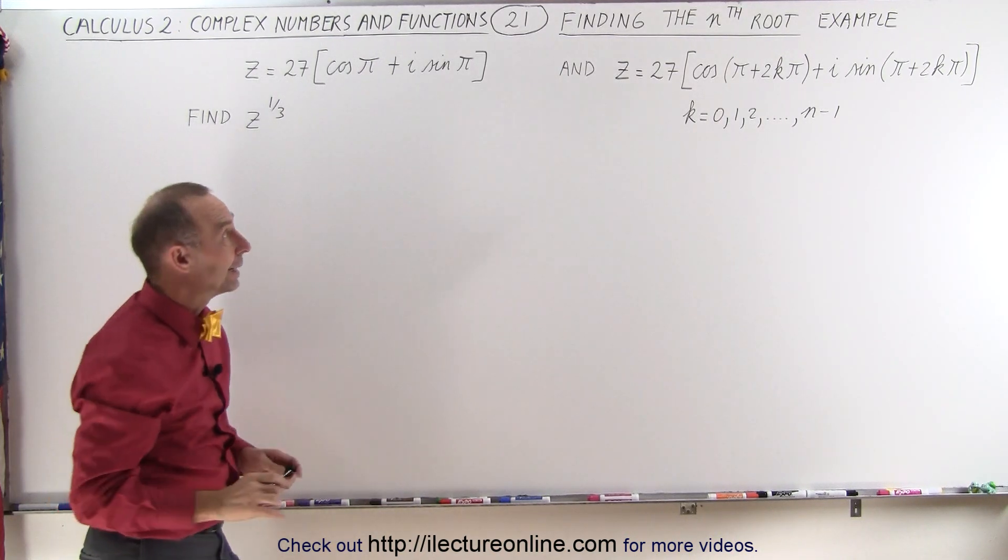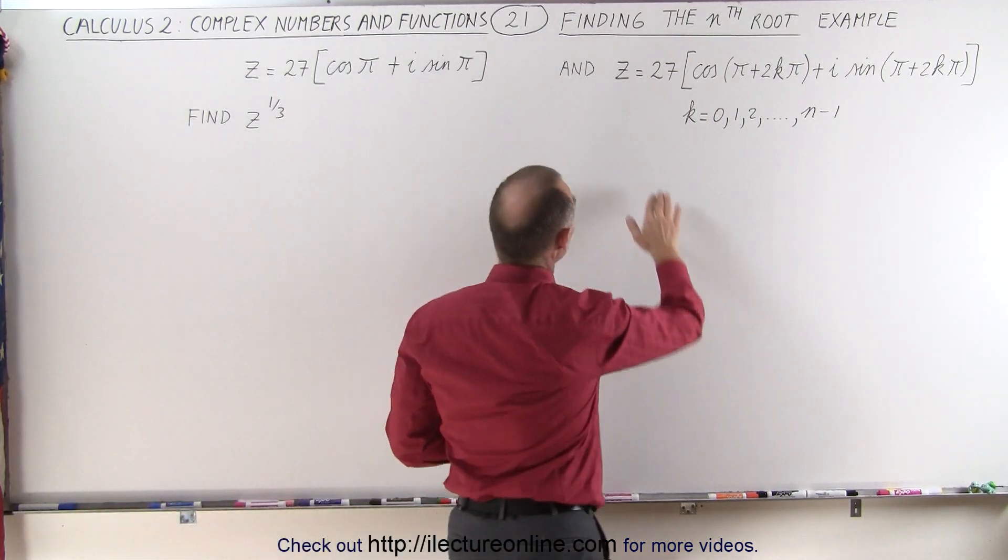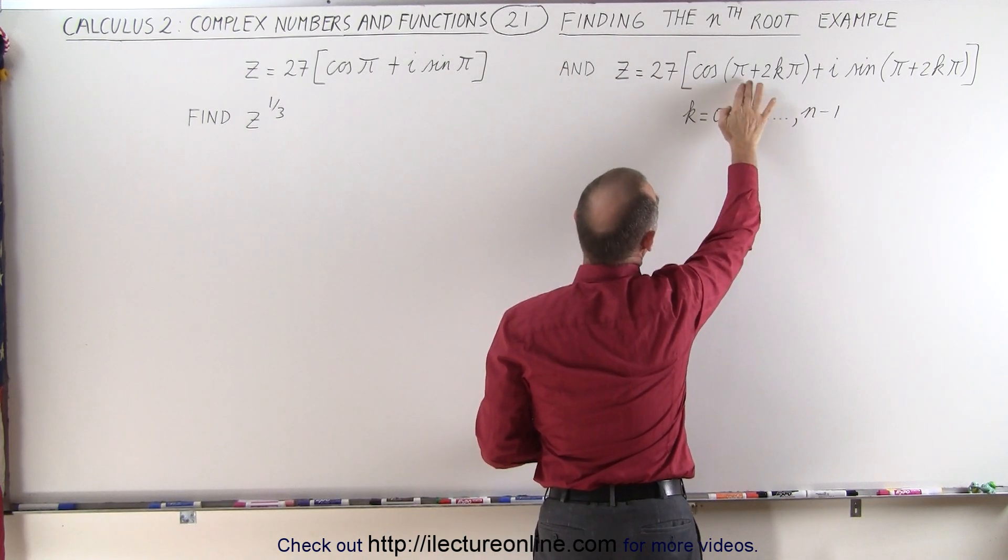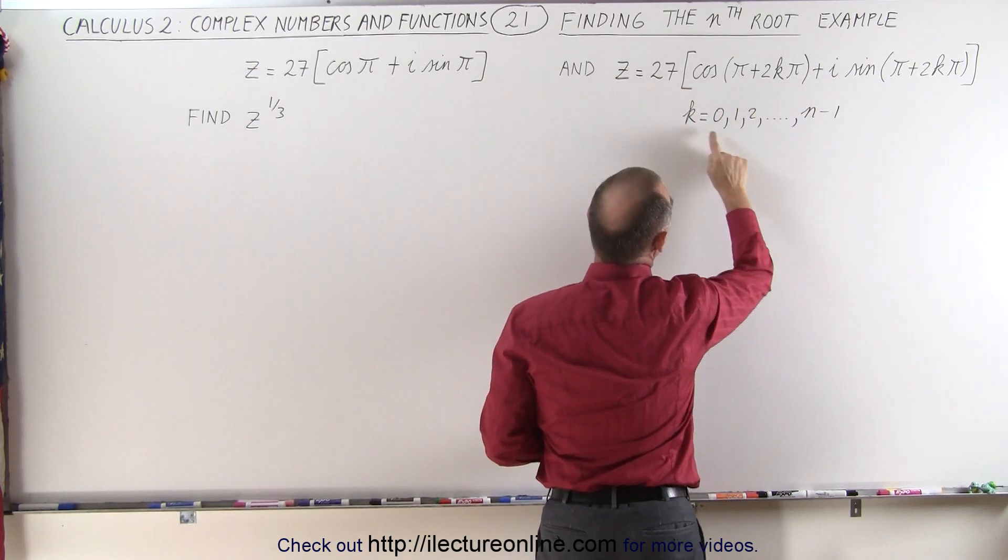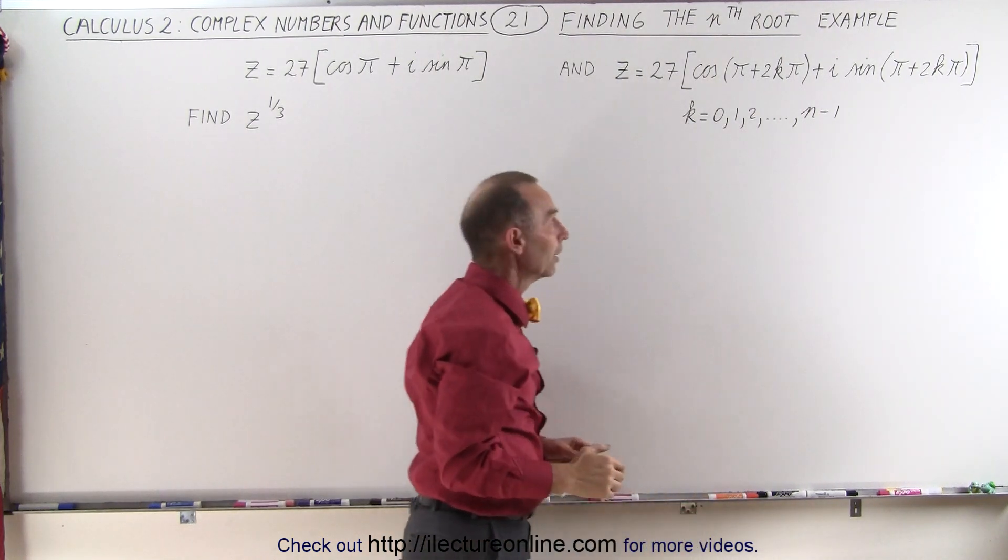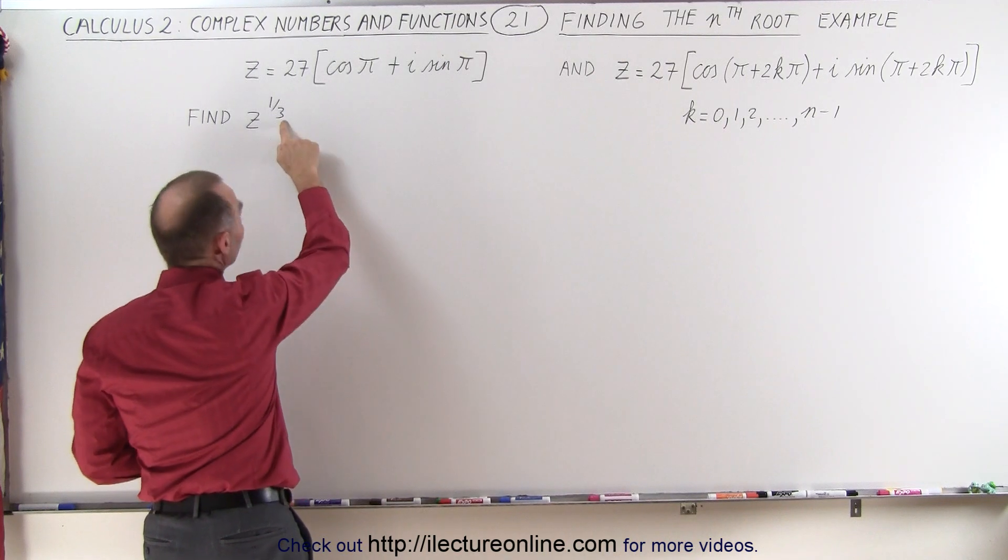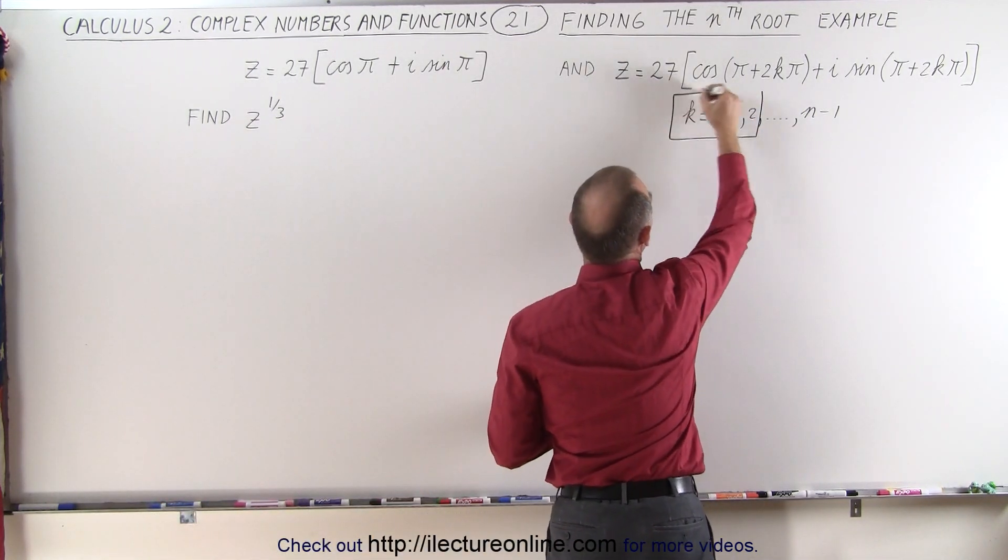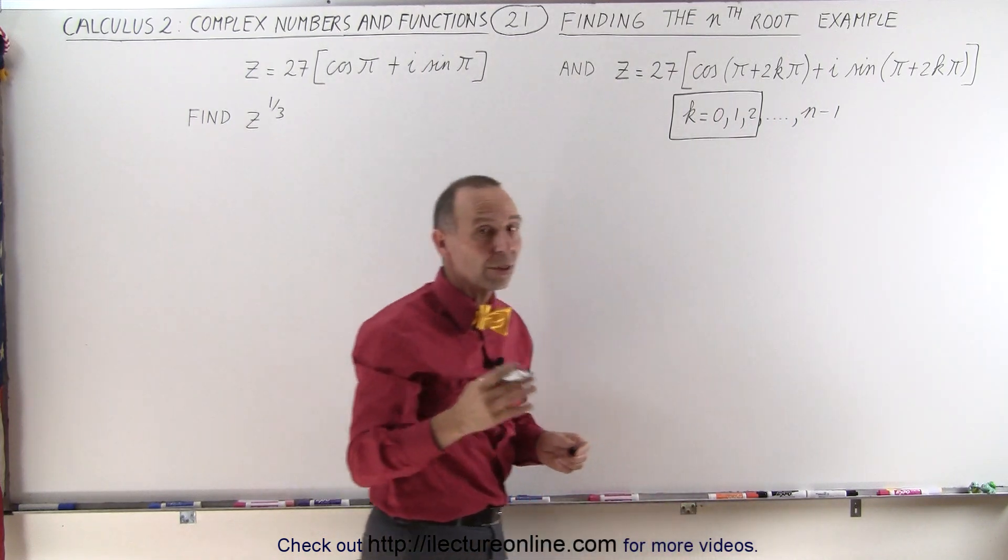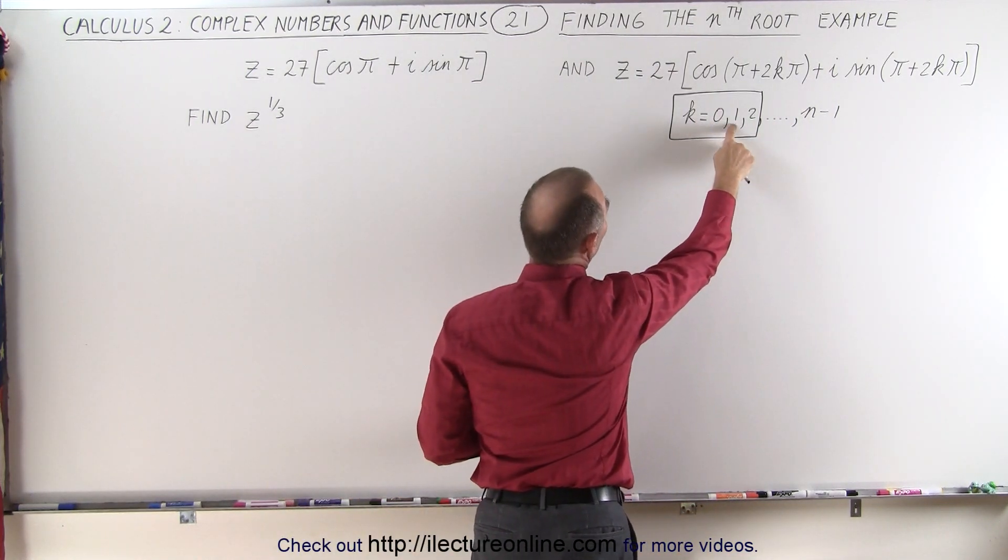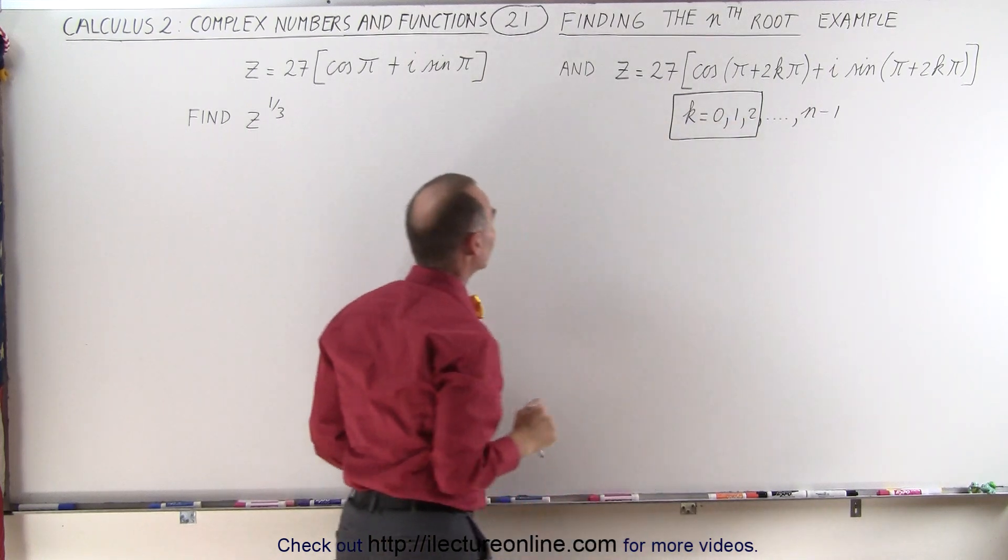But we have to remember that the representation of that number can be as follows, where we have the angle of π plus 2kπ, where k can be anywhere from 0 to n minus 1. Now in this case, n is going to be 3, so the maximum value for k is going to be 2, which means we're going to have to find the root 3 times: the first time for k equals 0, then for k equals 1, and then for k equals 2.